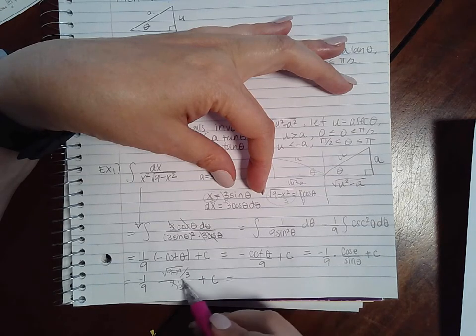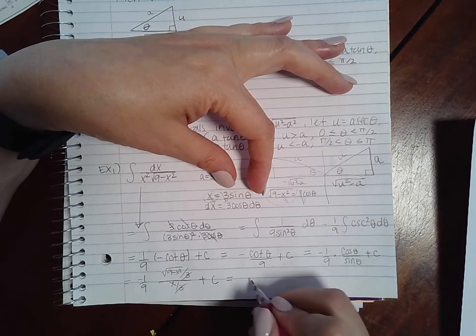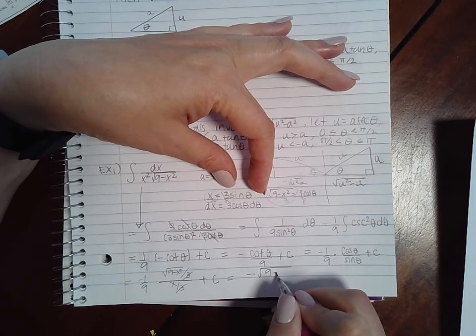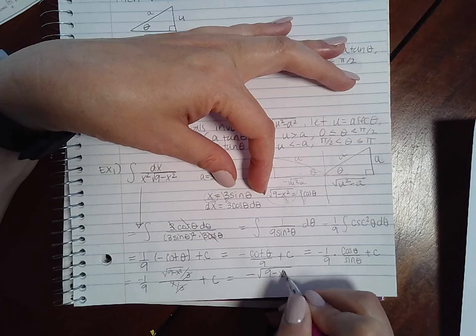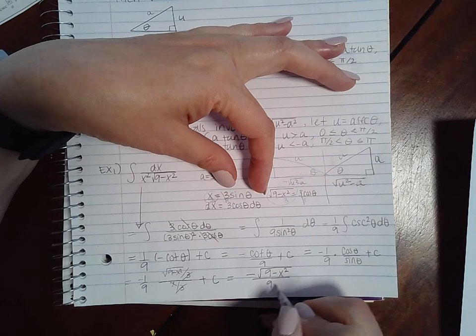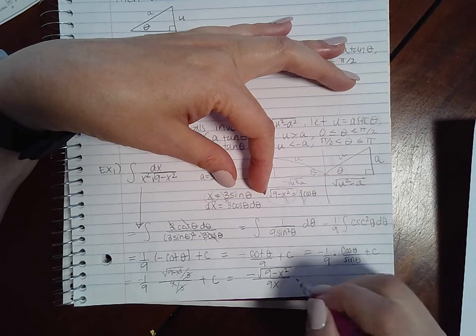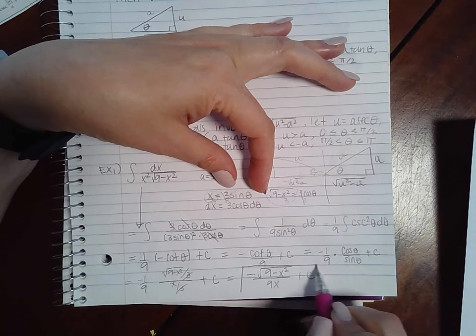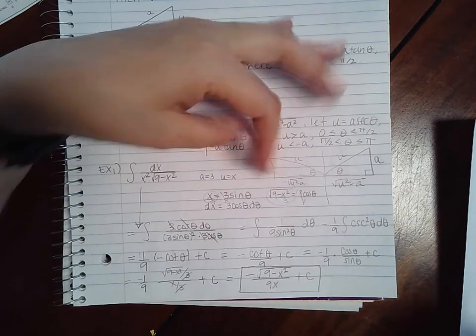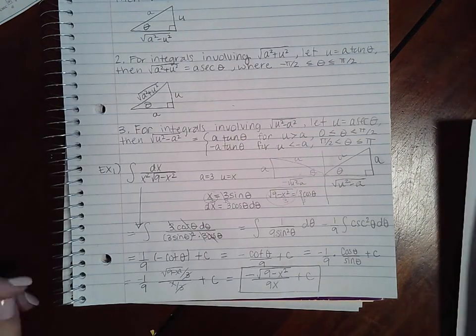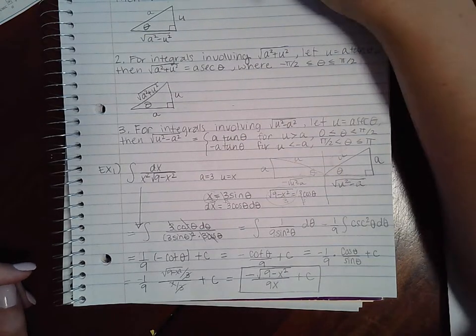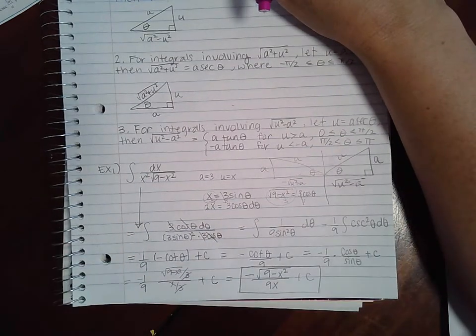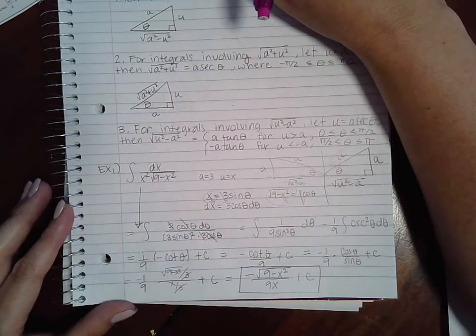The threes will cancel each other out, so essentially what I end up with is the negative square root of 9 minus x squared over 9x plus c. Now that things are back in terms of x, I can box this as my final answer. I'm going to stop the recording here and we'll continue on the next page with another problem.